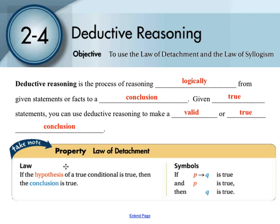The law of detachment states: if the hypothesis of a true conditional is true, then we can assume that the conclusion is true. Symbolically, if p implies q is true, and p is true, then q must be true.